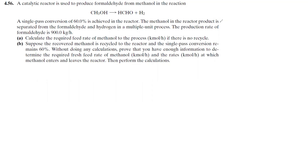I have a problem, 4.56. A catalytic reactor is used to produce formaldehyde from methanol in the reaction CH3OH → HCHO plus H2. A single pass conversion of 60 percent is achieved in the reactor.